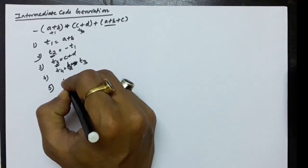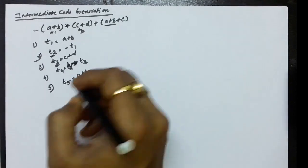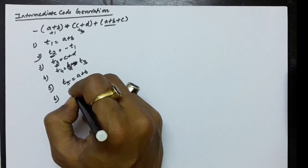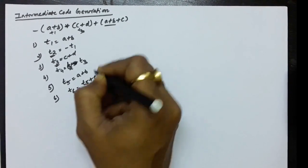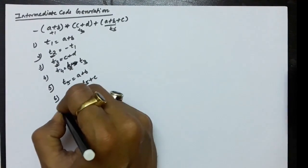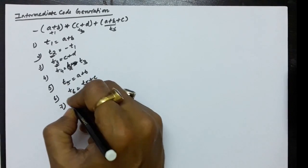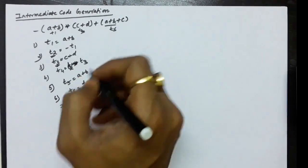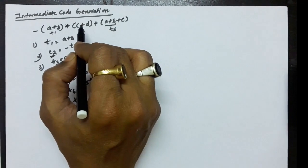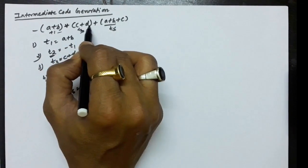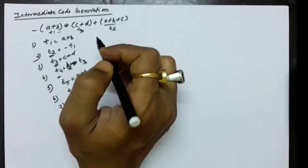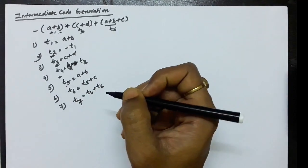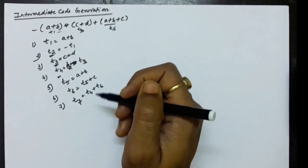Having done that, we find a plus b again and store it in temporary variable t5. Then in t6 we add t5 plus c. Finally, we already have t4 from the multiplication, and we add t4 and t6 and store that in t7. This is how we represent the three-address code, using as many temporary variables as needed.